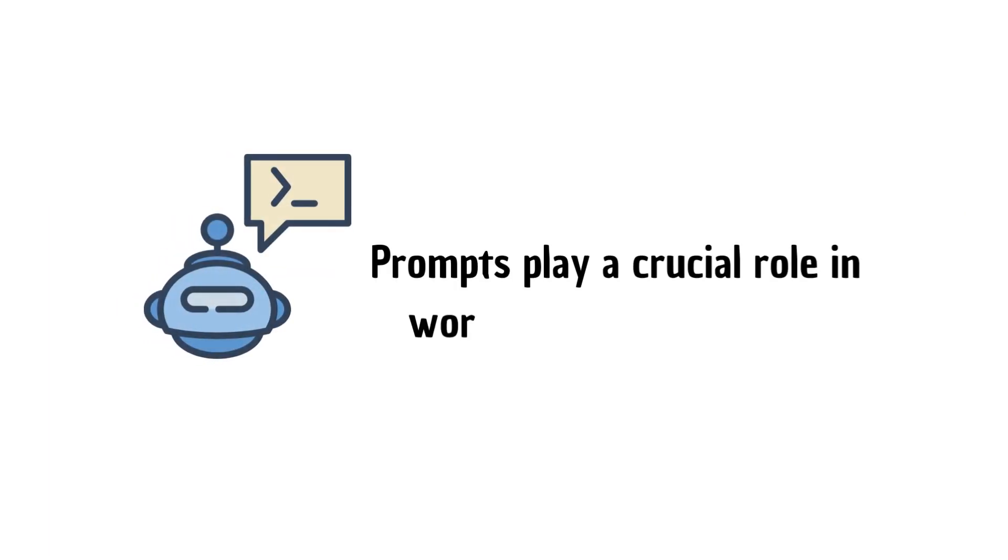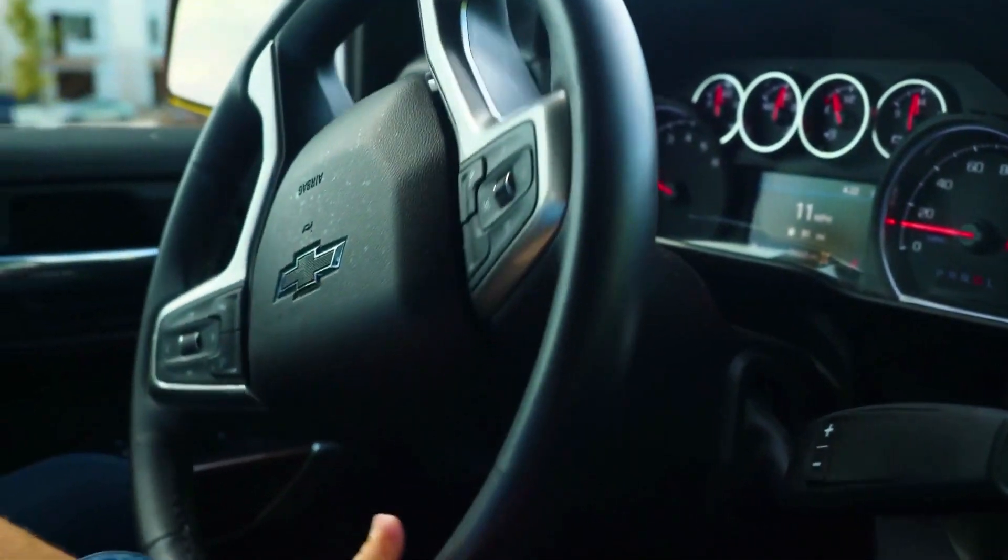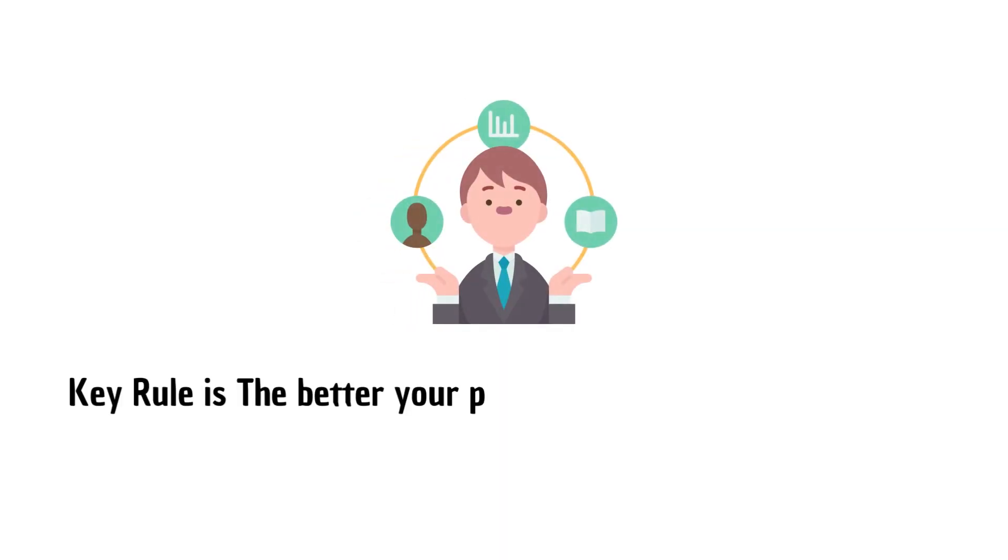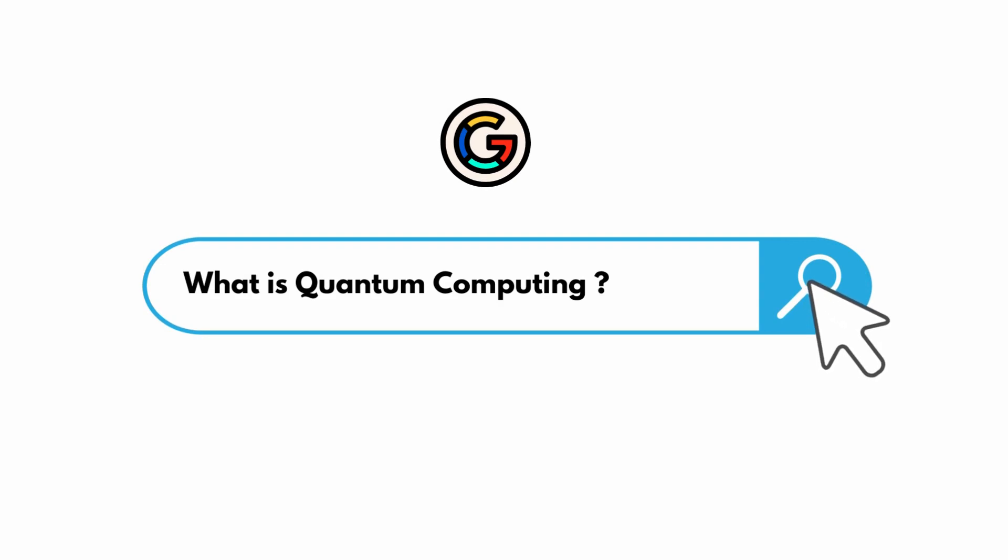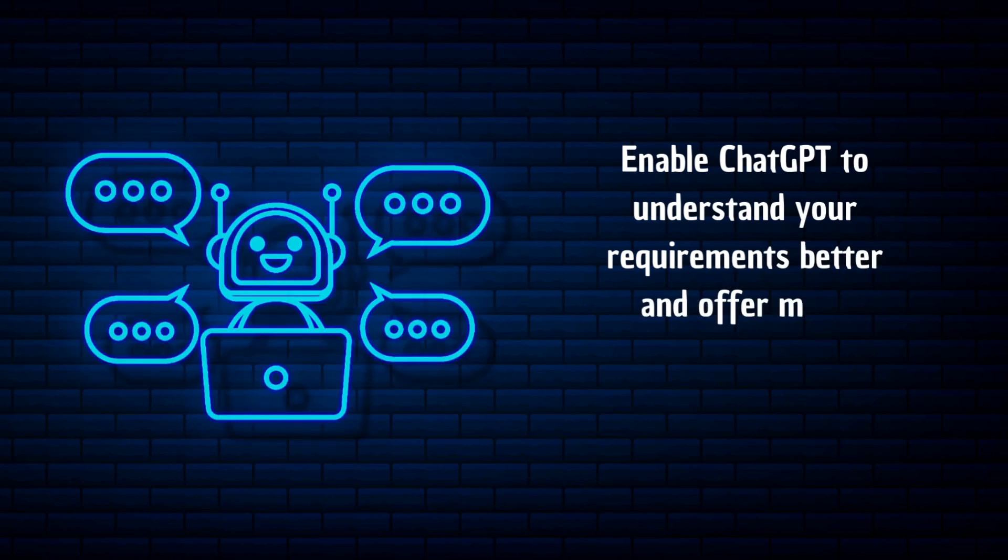Prompts play a crucial role in working with AI models. They're like the steering wheel and the car's gas pedal that helps you steer and control the AI's capabilities and guide it toward the right destination. Key rule is: the better your prompt, the better the response. Remember ChatGPT is not like a Google search, so don't just use a basic prompt but provide a detailed and specific framework. This way you'll enable ChatGPT to understand your requirements better and offer more precise and helpful responses.